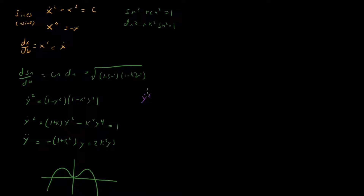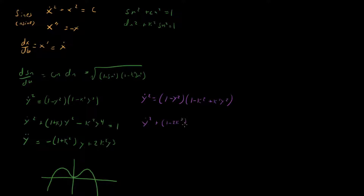When we repeat it for cn, what we find is: y-dot² = (1 − y²)(1 − k² + k² y²). Expanding this out: y-dot² + (1 − 2k²)y² + k² y⁴ = 1 − k².